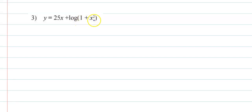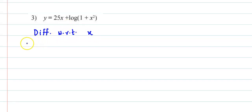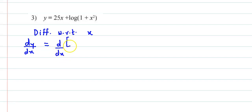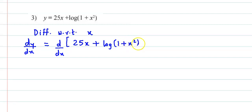Next: y is equal to 25x plus log of (1 plus x squared). We again differentiate with respect to x, and we have dy by dx equal to derivative of 25x plus log of (1 plus x squared).